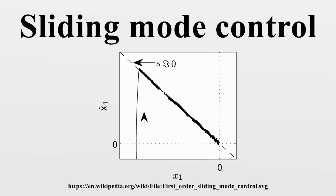The main strength of sliding mode control is its robustness. Because the control can be as simple as a switching between two states, it need not be precise and will not be sensitive to parameter variations that enter into the control channel. Additionally, because the control law is not a continuous function, the sliding mode can be reached in finite time. Under certain common conditions, optimality requires the use of bang-bang control. Hence, sliding mode control describes the optimal controller for a broad set of dynamic systems.